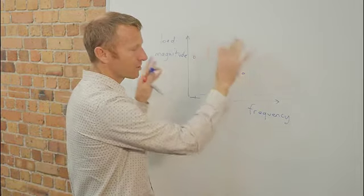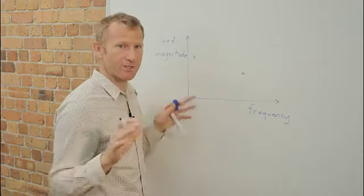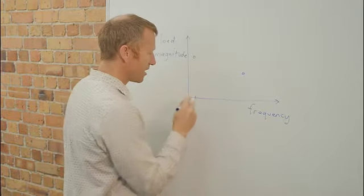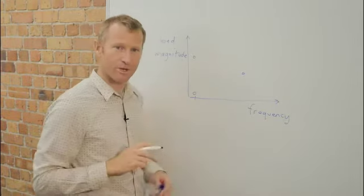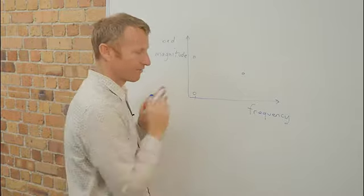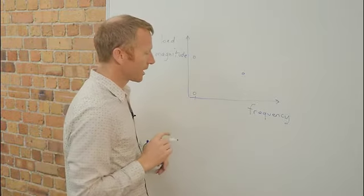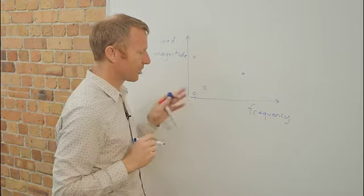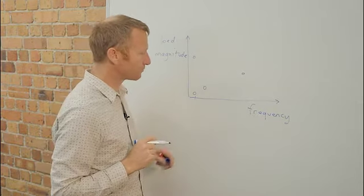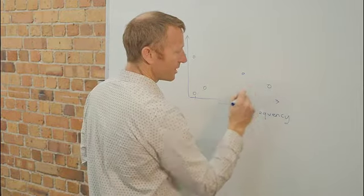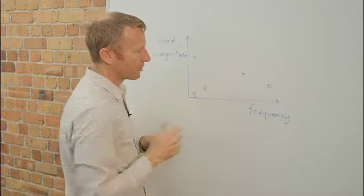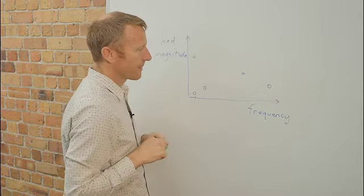You can imagine populating this diagram with lots of different activities. For example, sitting here right now listening to me, you're probably somewhere down here where you're not experiencing much load at all, and the frequency is very low. If you go swimming, you might experience some load that's quite low as well. If you go for a long walk, you might be somewhere over here. You can populate this diagram with lots of different activities.